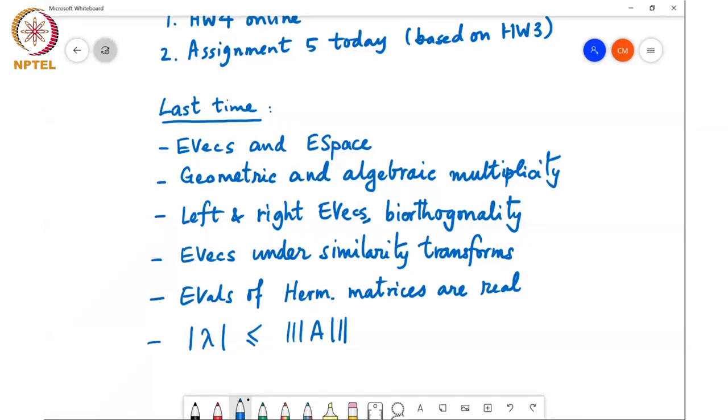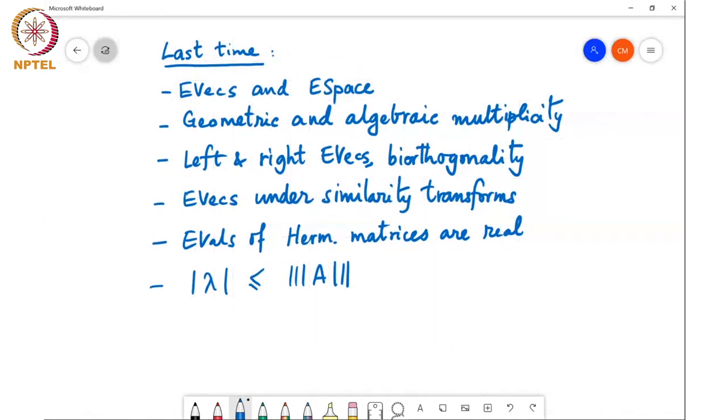So an immediate consequence of this is that if lambda is an eigenvalue of A, then mod of lambda is less than or equal to max over i from 1 to n of sigma j from 1 to n of mod a_ij.